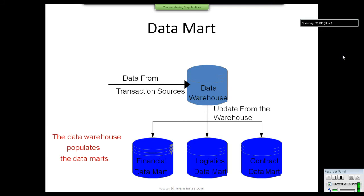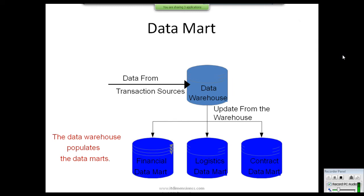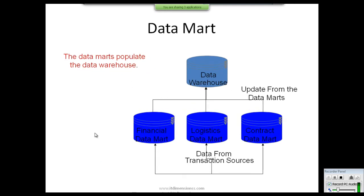How do we pull data from sources and fill it into the data warehouse? There are two concepts. First, data can be pulled directly into the data warehouse, which then populates the data marts — meaning the data warehouse populates the data marts. As shown in the figure, data first comes to the data warehouse, and as it is updated, the data marts get updated automatically.